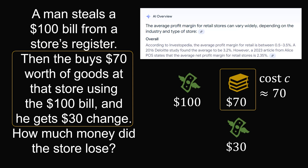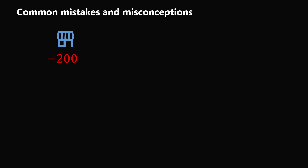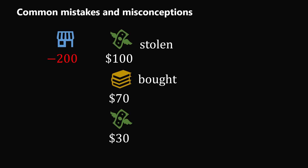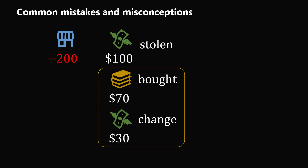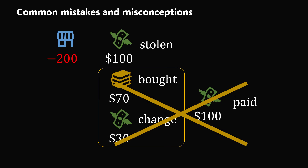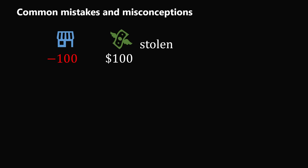Now let's look at common mistakes and misconceptions. Some people think the store has lost $200. They reason: the store lost a $100 bill (stolen), then $70 worth of goods were bought, and $30 in change was given — so $100 + $70 + $30 = $200. But what's missing is that the $70 of goods and $30 of change were counteracted by the $100 that was paid for them. That transaction cancels out, and in the end the store has lost $100.